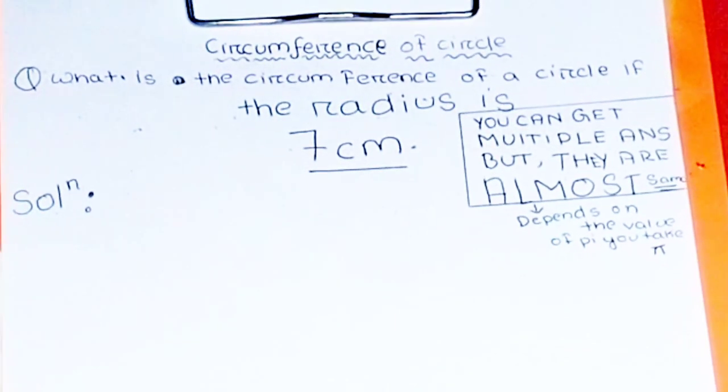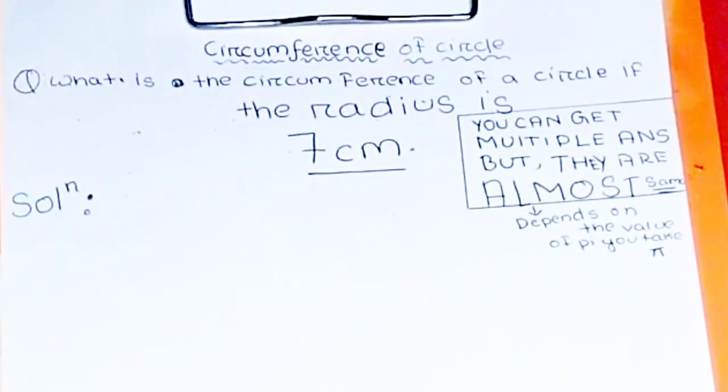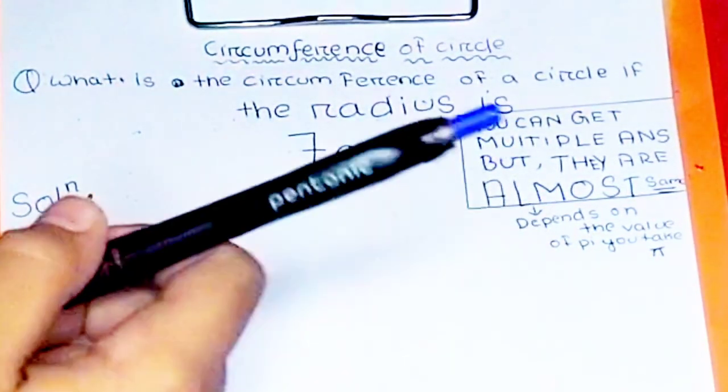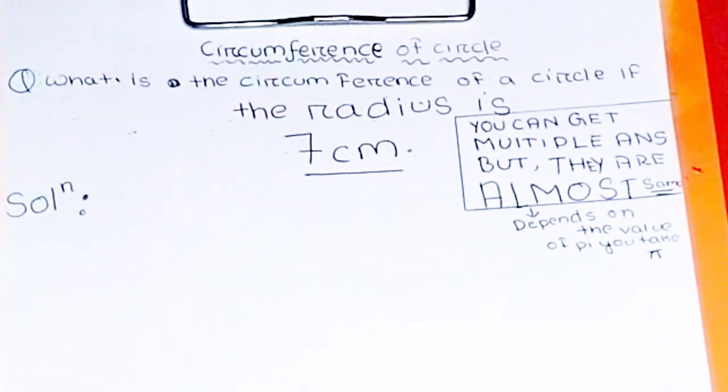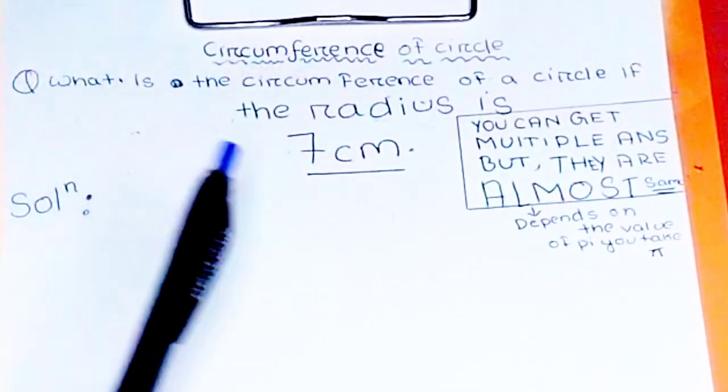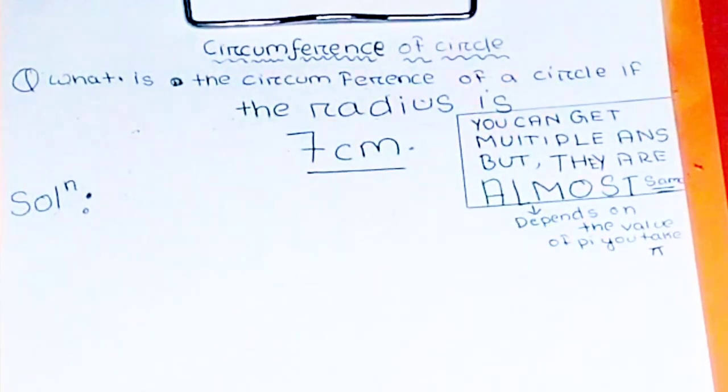So here I have a question on the paper. What is the circumference of a circle if the radius is 7 centimeters? Also, another thing: this kind of question you can get different answers.